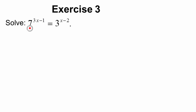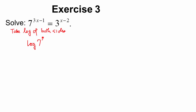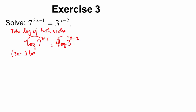In exercise 3, we already have isolated exponents on both sides, and the x variable is in the exponents. Since we can't express these with the same base, we take the natural log — or just the log — of both sides. Taking the log: log of 7 to the 3x minus 1 equals log of 3 to the x minus 2. Use the power property to bring down the exponents: 3x minus 1 times the log of 7 equals x minus 2 times the log of 3.